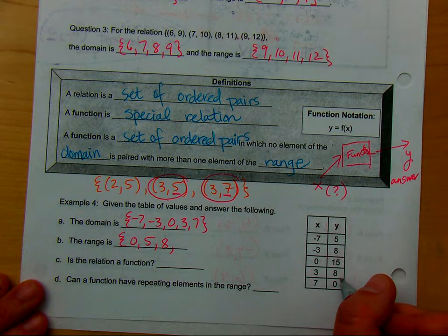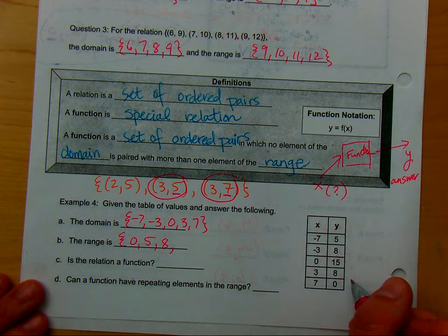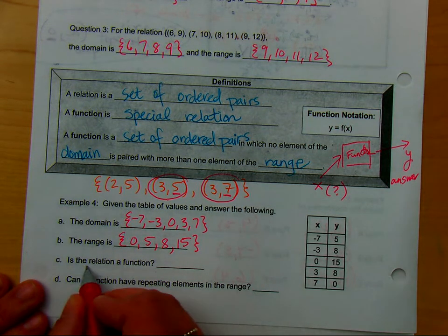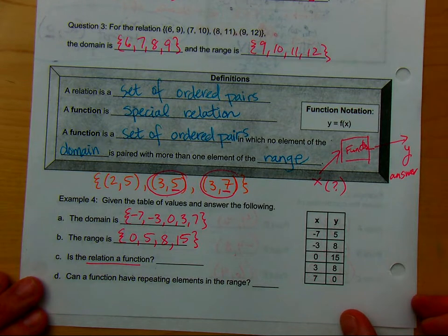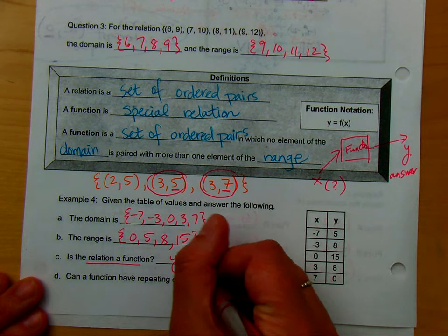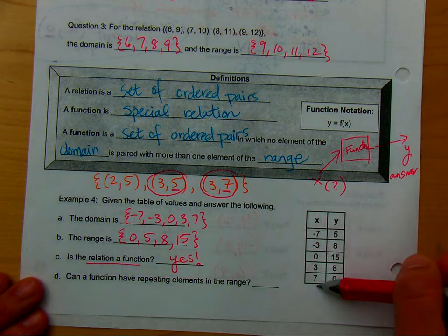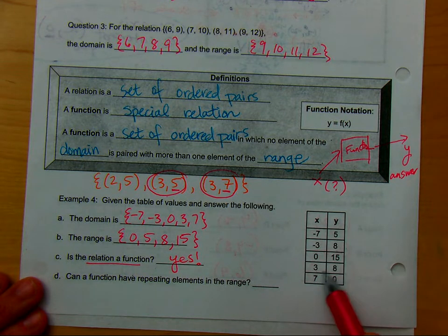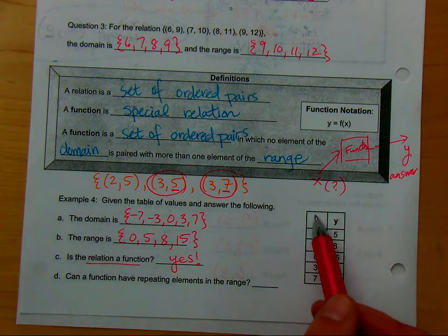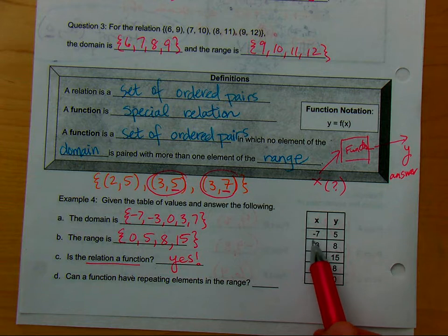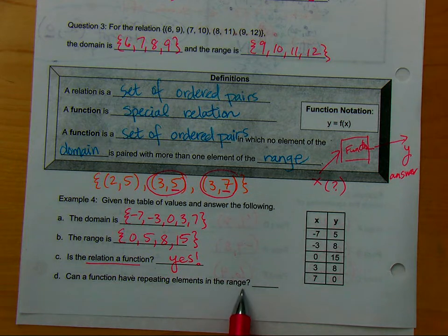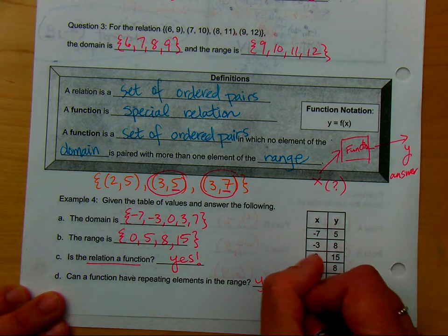Eight happens twice, but eight is the same number, isn't it? Do I have to list it twice? Not really. And 15. Is this relation a function? What do you think? So it is a function, yes. Why would you say it's a function? Because none of the X values are repeating. Even if you have the same value eight here repeating, it's still like saying a different question gives you the same answer. It's not that the question changed, or sorry, it's not that you had the same question and two different answers. So can a function have a repeating element in the range? Yes, it can.